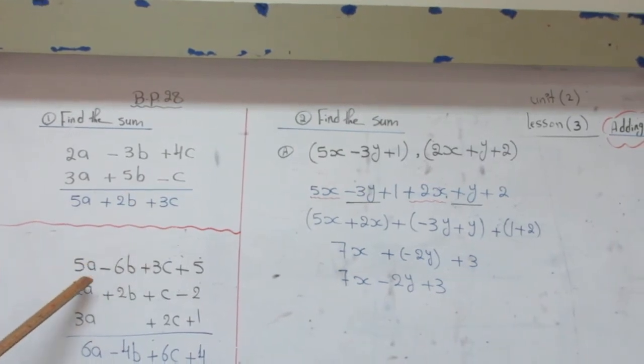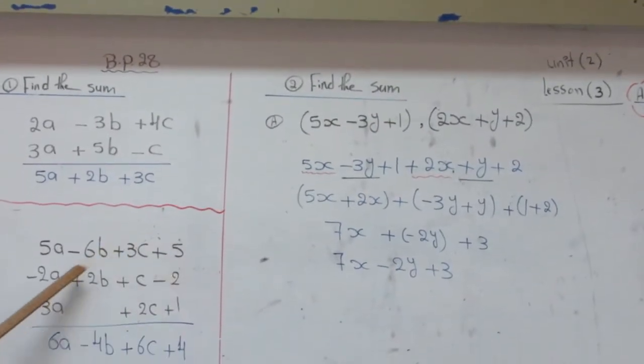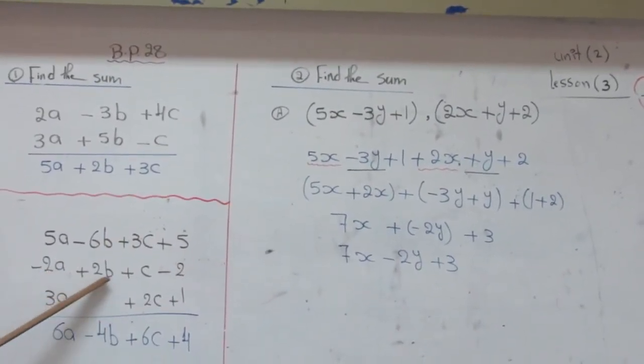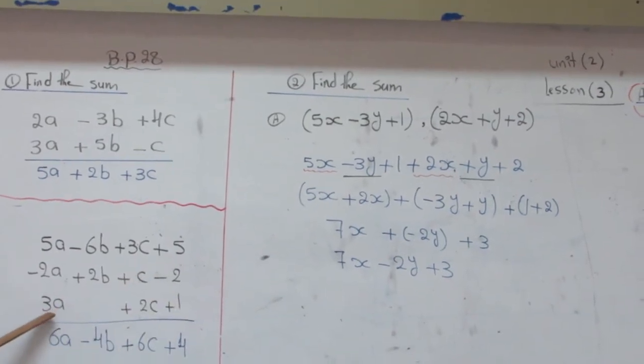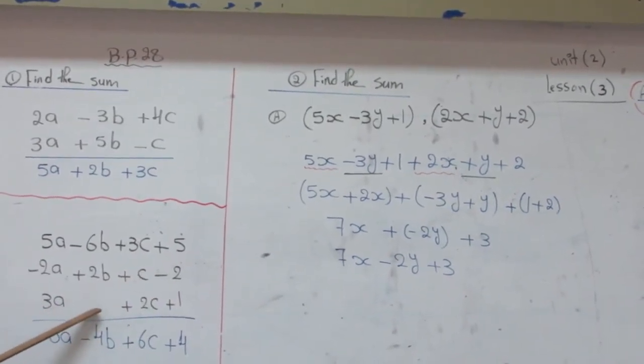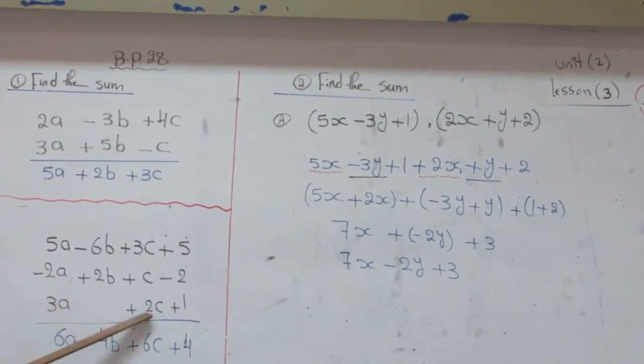The second example is 5A minus 6B plus 3C plus 5, plus negative 2A plus 2B plus C minus 2. The third expression is 3A. I don't have B here, then I will leave a space here. 3A plus 2C plus 1.